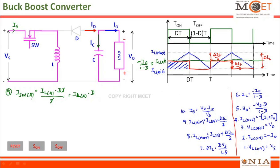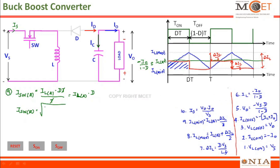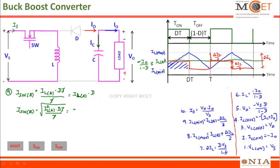This IL average is nothing but minus I0 divided by 1 minus D. You can substitute it and find out the IL average in terms of the load current. Similarly, the switch RMS current can be found out by taking the square root of IL average squared into DT by T. If you simplify this, you will get IL average into the square root of D. This is the expression for the RMS value of the switch current.